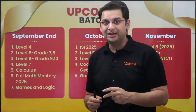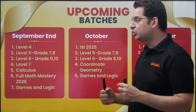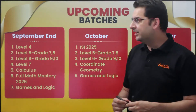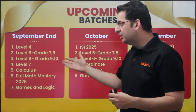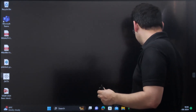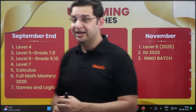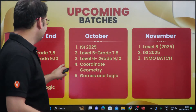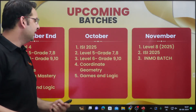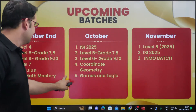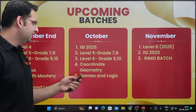These are the upcoming batches. Our upcoming batches are ready to launch in September, October and November. We are starting with Level 4, Level 5, Level 6, Level 7, Calculus, Full Math Mastery 2026, and Games and Logic — this is a new course which is coming up. In October: ISI 2025. In November: Level 5, Level 6, Coordinate Geometry, Games and Logic, Level 8 for 2025, ISI 2025, and the Inmo batch will be launching in November.